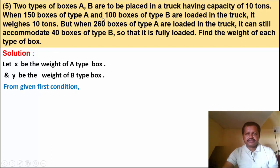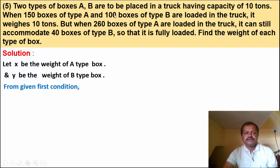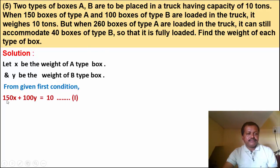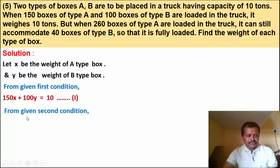From the first condition: 150 boxes of type A and 100 boxes of type B weigh 10 tons total. So 150x plus 100y is equal to 10 tons. That is equation number 1.